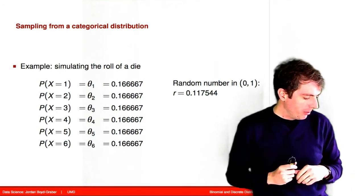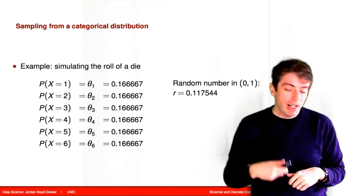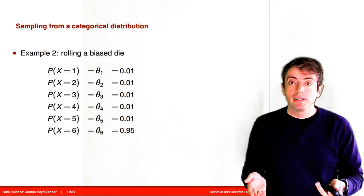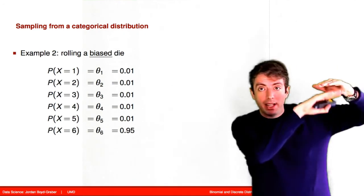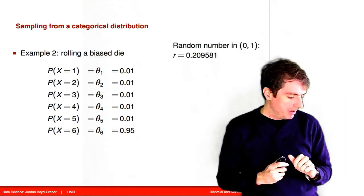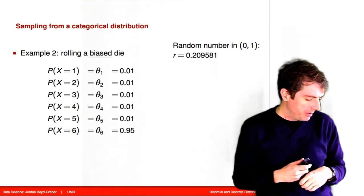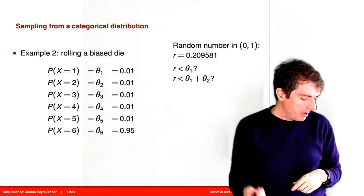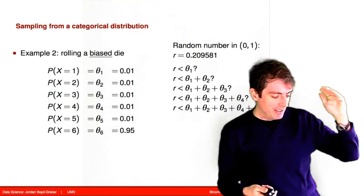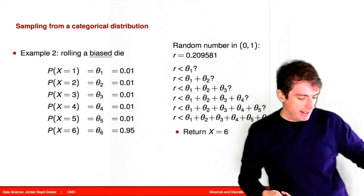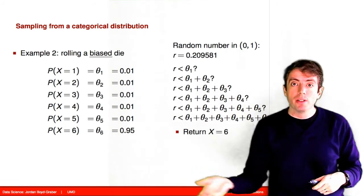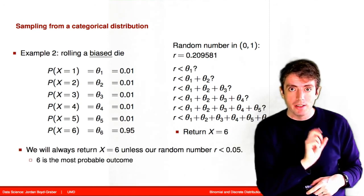Let's do this again. Say you draw the random number 0.11754. You first check: is that less than your first theta? It is. So you return x equals one. Now let's see what happens with an unfair die — one that almost always returns six and has a very low probability for any of the other outcomes. If you draw the random number 0.209581, you check theta one, theta one plus theta two, and so on — you're not going to get less than the cumulative sum until you add in theta six, which is a large contributor to the probability mass. So almost always you will return six, showing we've successfully modeled a weighted die.